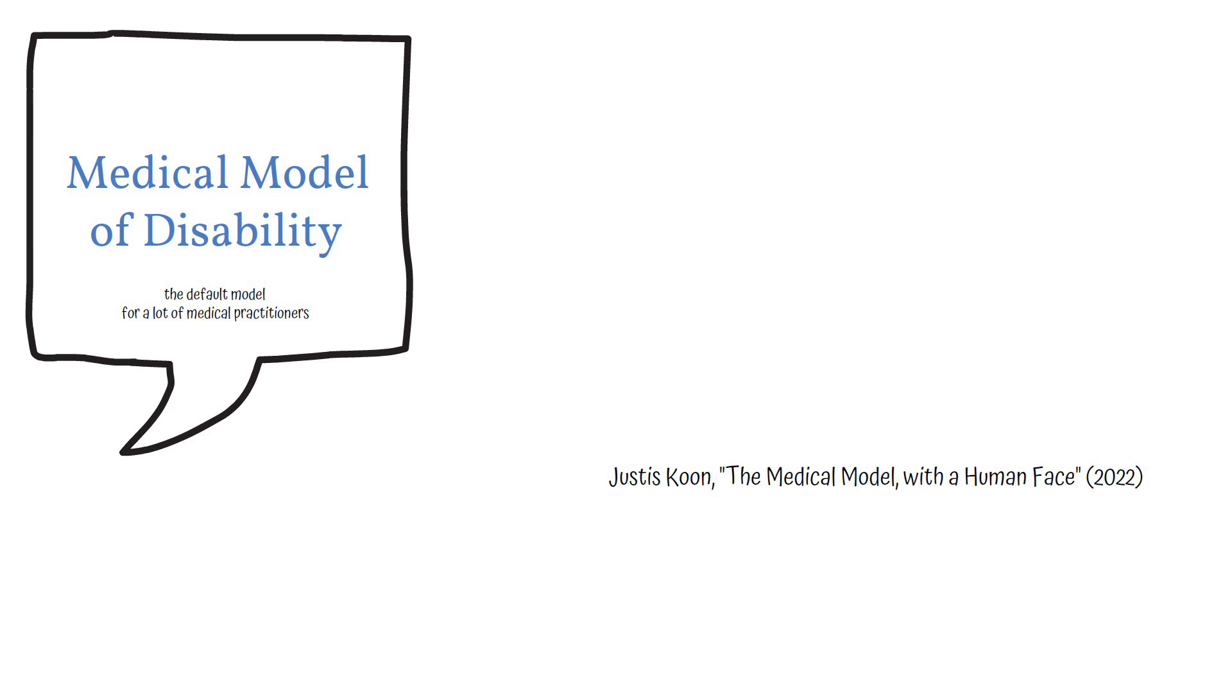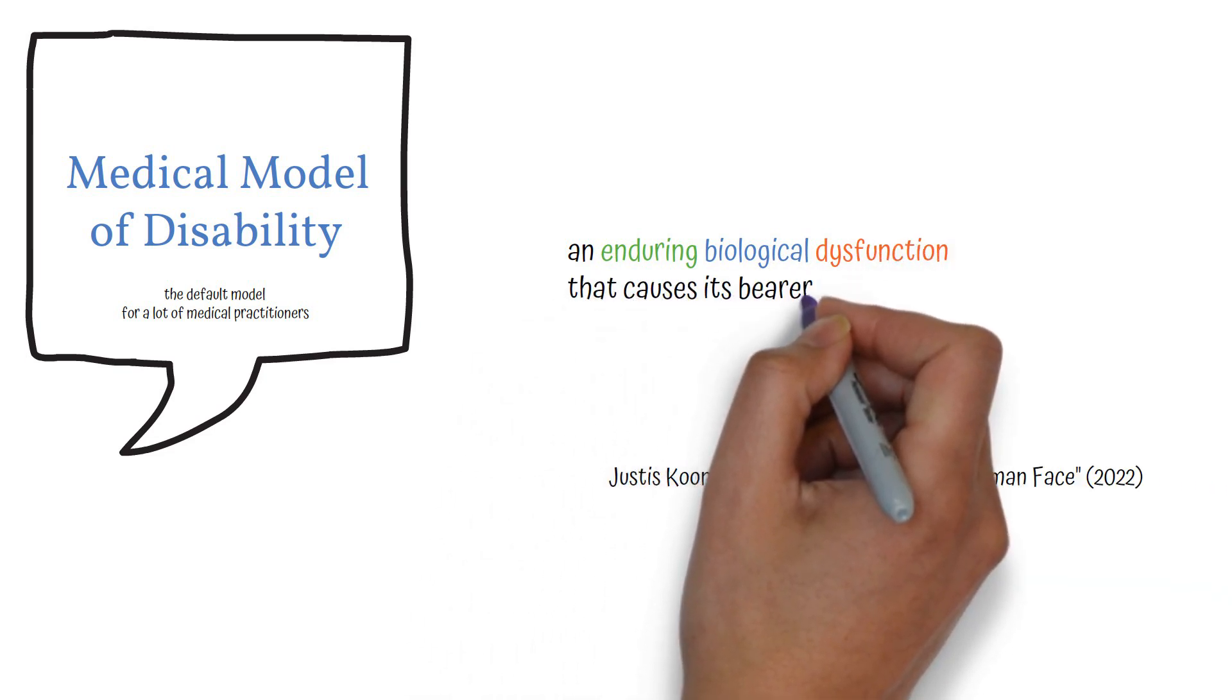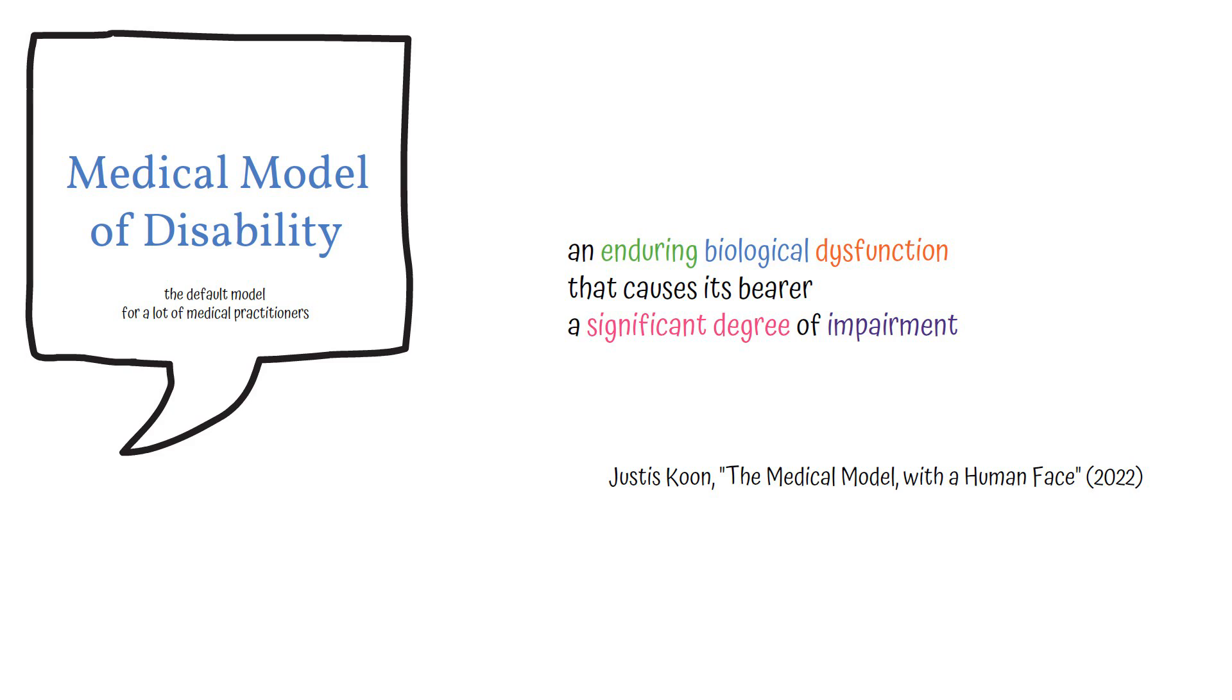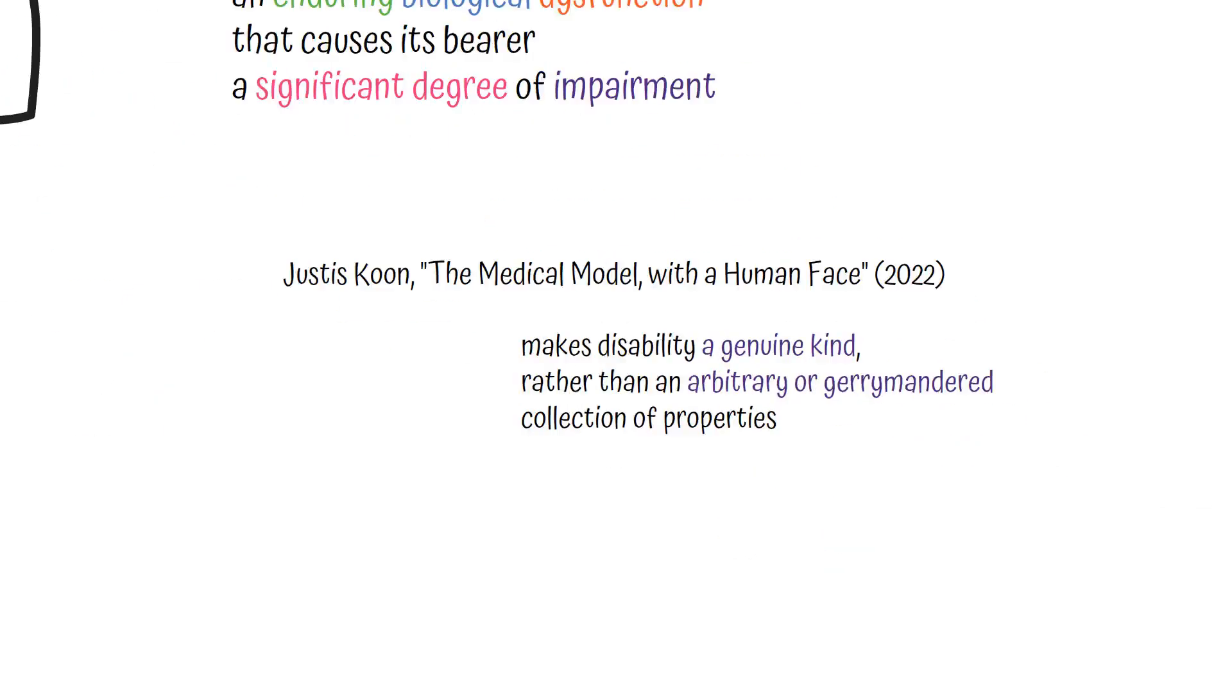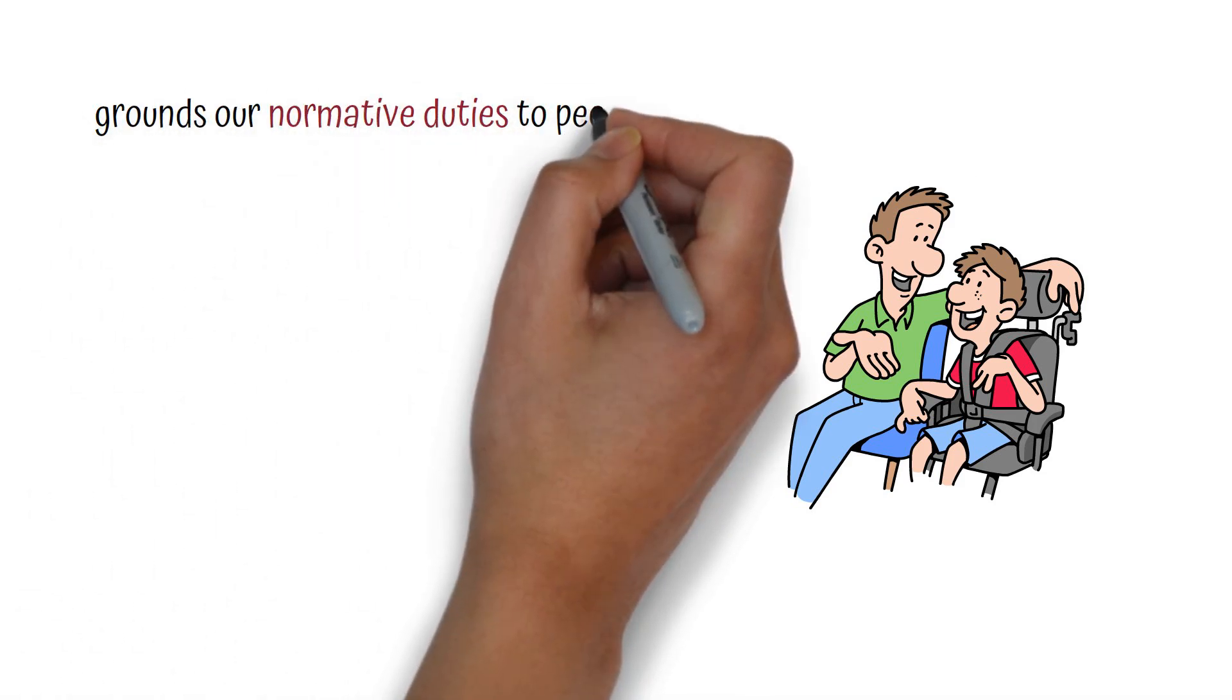In his article, Kuhn defines disability as an enduring biological dysfunction that causes its bearer a significant degree of impairment. The most important part of this definition, Kuhn argues, is that it makes disability a genuine kind rather than an arbitrary or gerrymandered collection of properties, and it grounds our normative duties to people with disabilities.